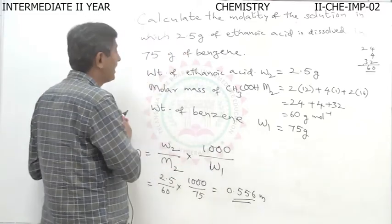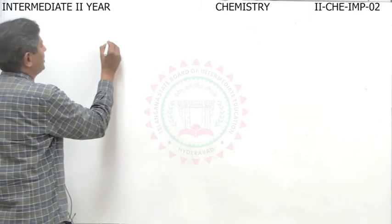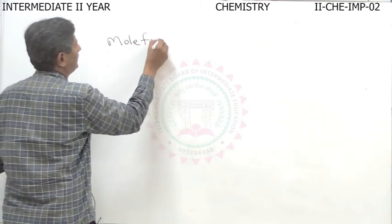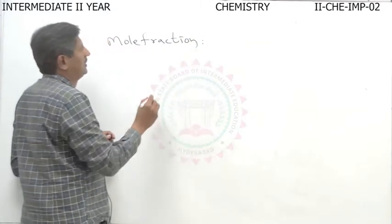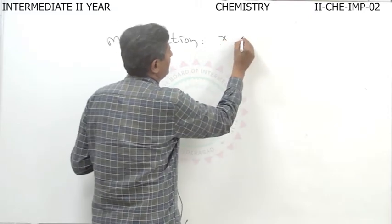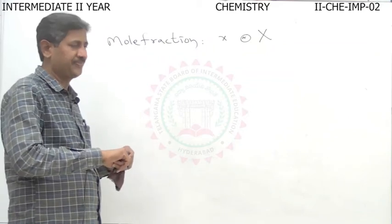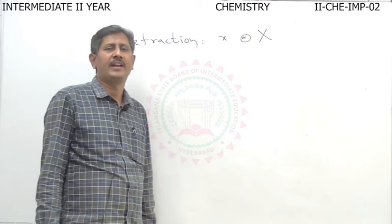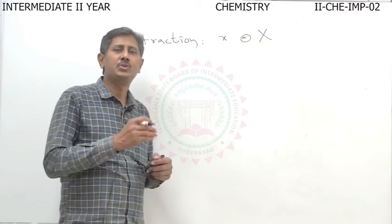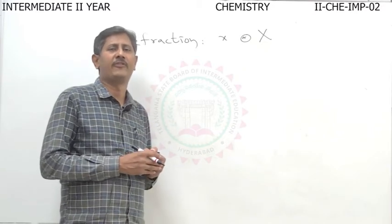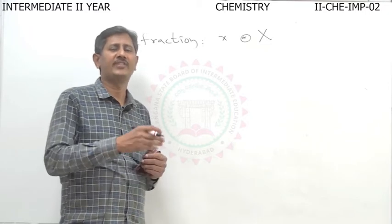Now we can see mole fraction. Mole fraction is denoted by a small x with a subscript. The ratio of the number of moles of one component to the total number of moles of all the components of a solution is called the mole fraction of that component.